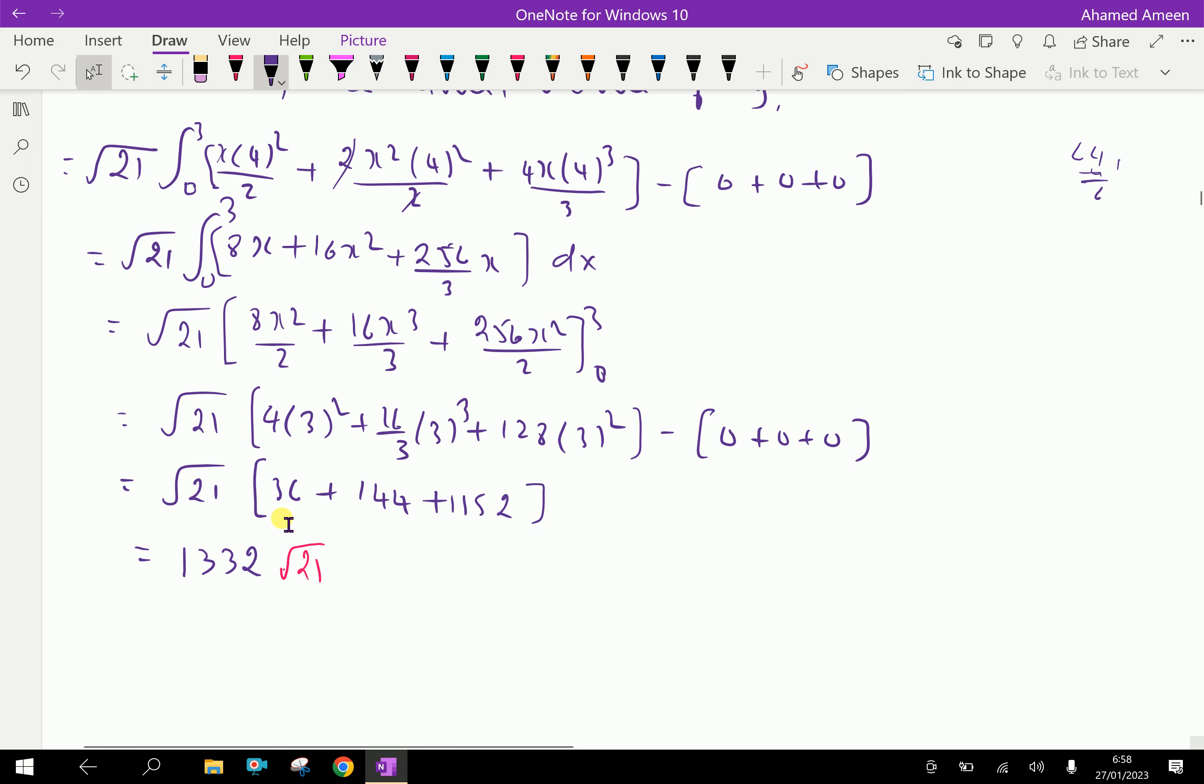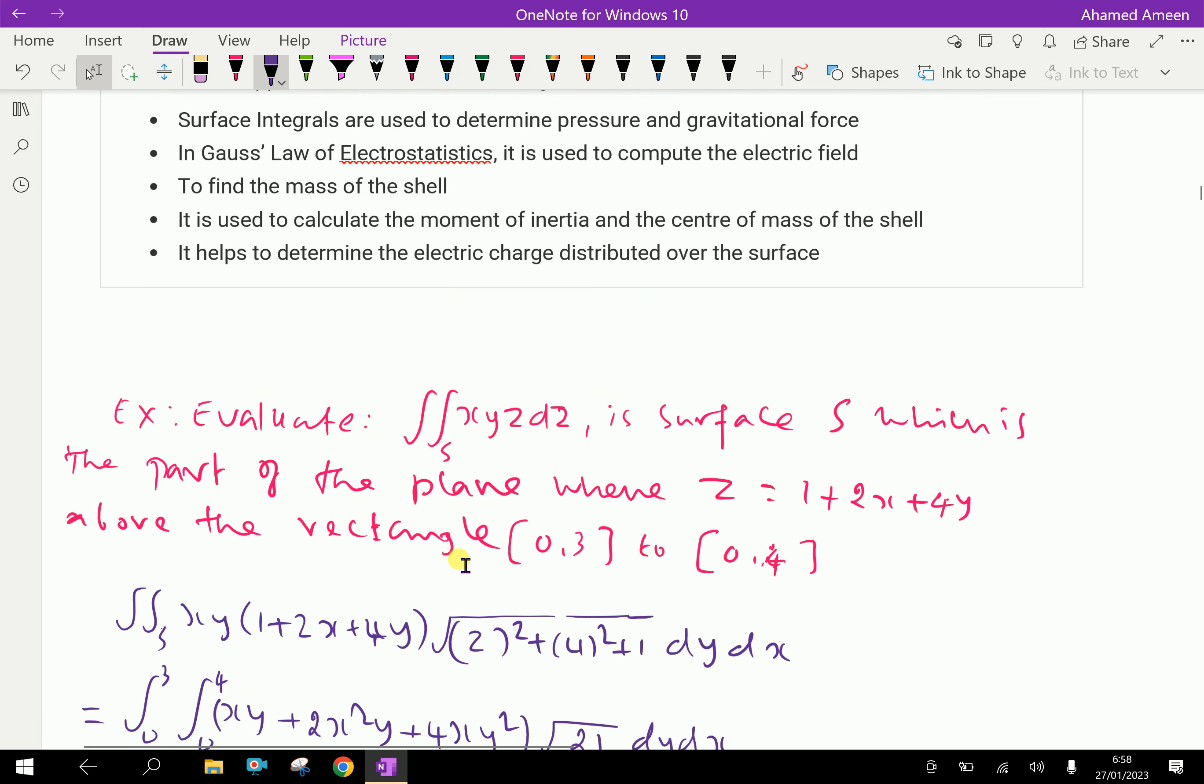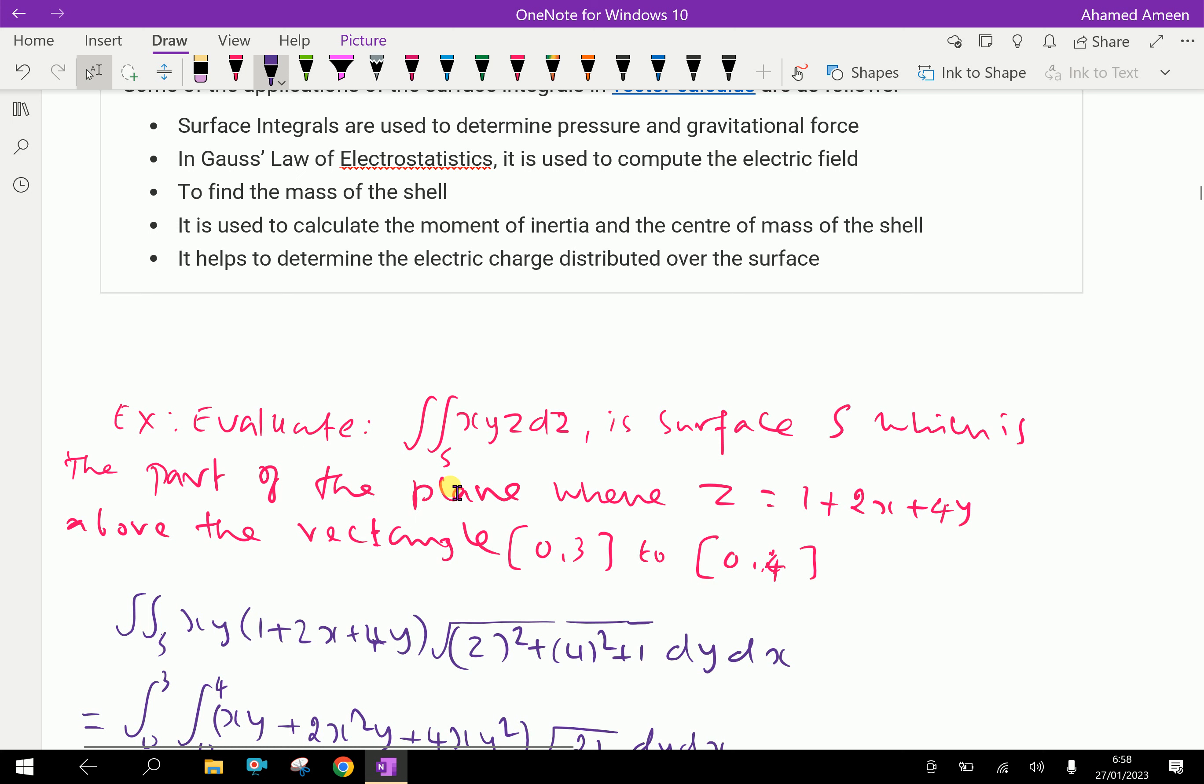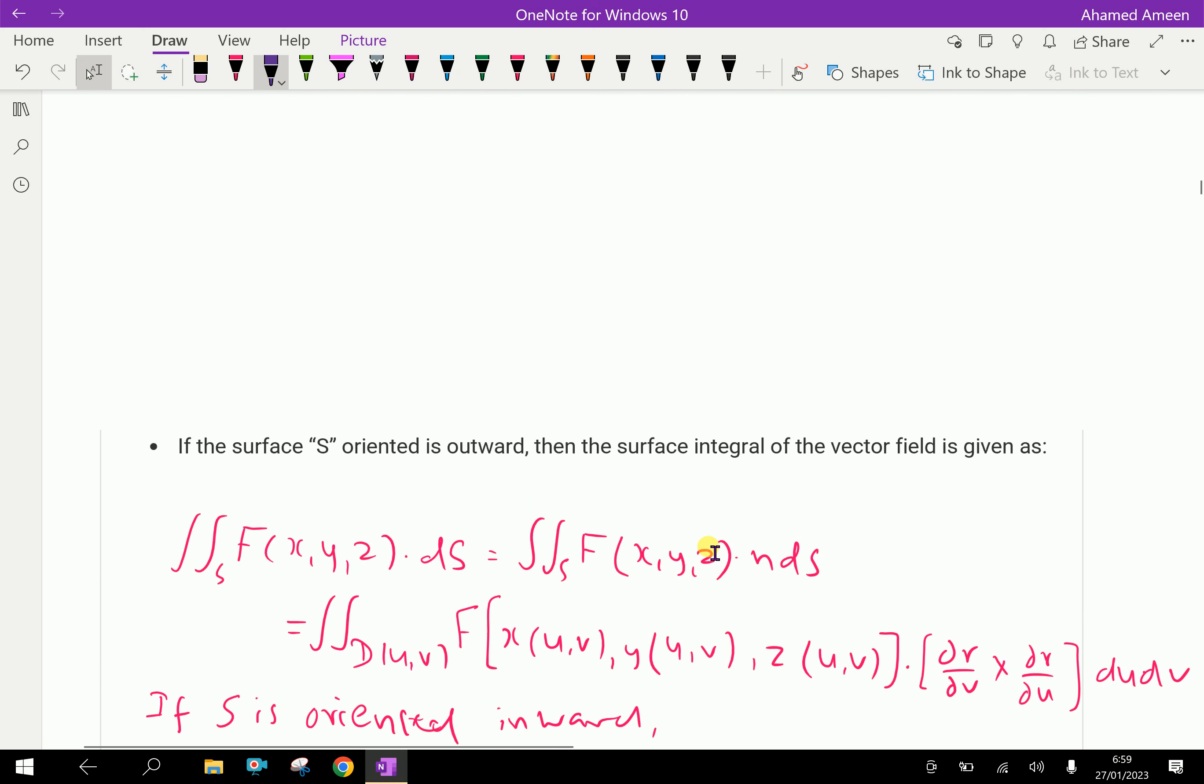After simplification we get √21 times [36 + 144 + 1152] = 1332√21. Therefore we calculated the surface integral over S of xyz dS for the part of the plane z = 1 + 2x + 4y above the rectangle [0,3] × [0,4].